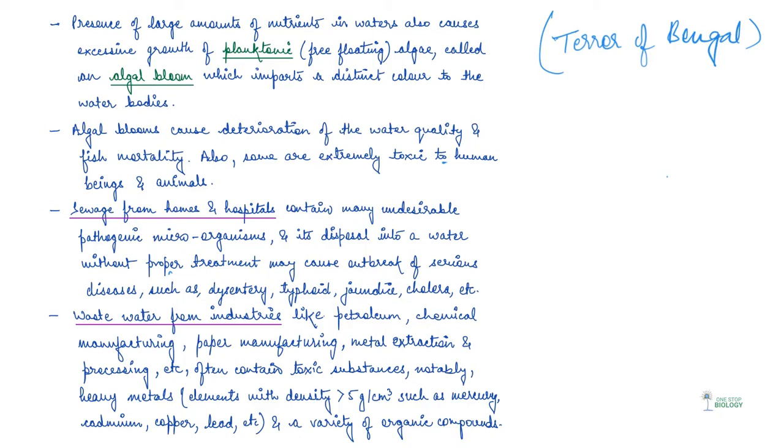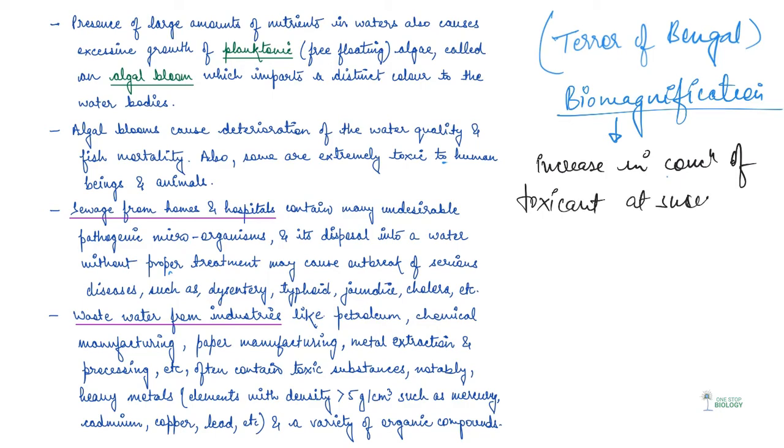These toxic substances which are present in industrial wastewater can undergo biological magnification, which is known as biomagnification in the aquatic food chain. So basically, what is biomagnification? Biomagnification refers to increase in concentration of toxicant at successive trophic levels.